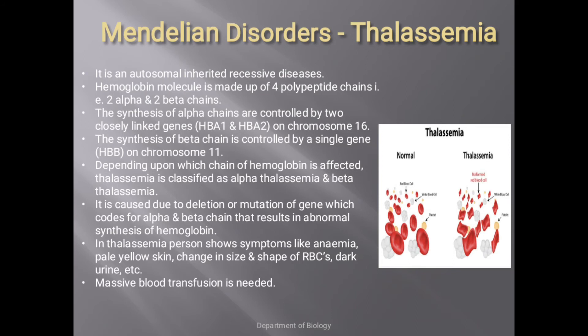First we will discuss the Mendelian disorder thalassemia. Thalassemia is an autosomal inherited recessive disease, meaning it can transfer from one generation to another generation.